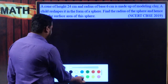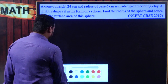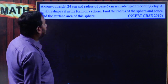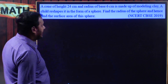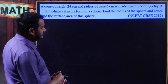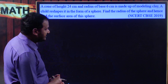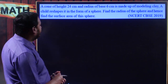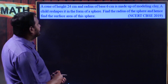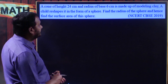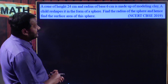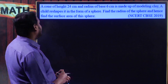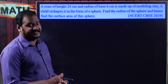The problem given is: a cone of height 24 centimeters and radius of the base 6 centimeters is made up of modeling clay. A child reshapes it in the form of a sphere. Find the radius of the sphere as well as the surface area of the sphere.